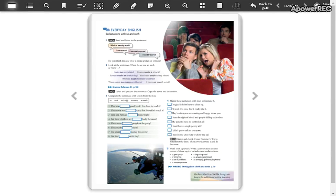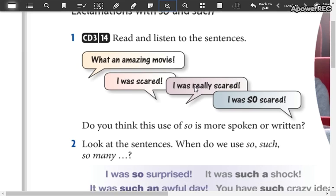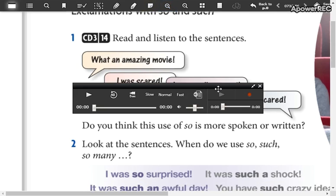Hi everyone, so today is our class number 17, this is our last class of low intermediate 3. Today we're going to work with page 73. In this page we are going to check these exclamations with so and such. For example, here we are going to listen and read these sentences.